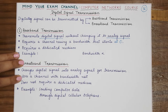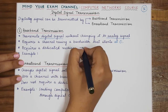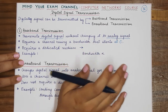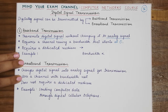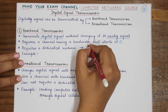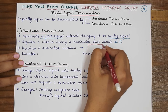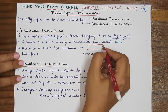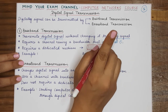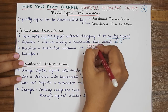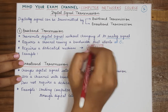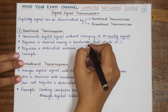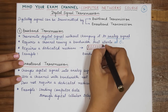Baseband transmission also requires a dedicated medium. This means that when a signal is propagating, only one frequency will be propagating through it — multiple frequencies cannot be sent through the channel. If communication is happening between sender A and receiver B and the channel is shared, at any given time this medium will behave as a dedicated medium and will not be shared.